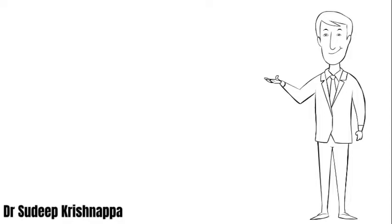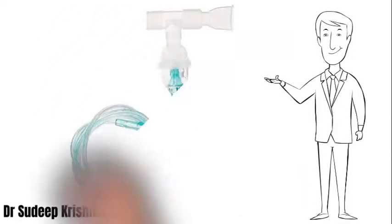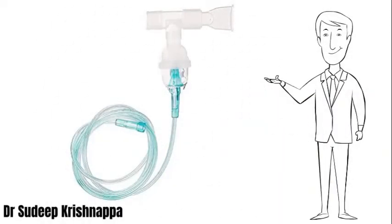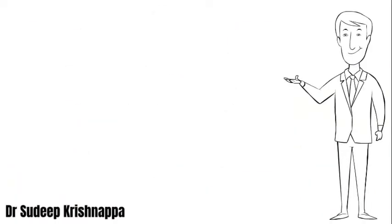These nebulizers come in various shapes and sizes according to the manufacturer's specifications; however, all of them have the same basic components. We have a tubing, one end of which is connected to a compressed air machine or oxygen flow, and the other end is connected to the nebulizing chamber, which in turn is connected to either a mask, mouthpiece, reservoir bag, or a T-piece to facilitate delivery of the nebulized solution into a ventilatory circuit.